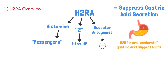This class of drugs, the H2RAs, is moderate at suppressing gastric acid — not the strongest, not the weakest, right in the middle. In a previous video we talked about PPIs, proton pump inhibitors, which are the strongest. H2RAs are a step down from that.